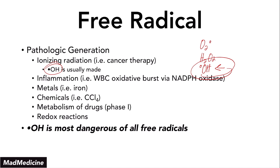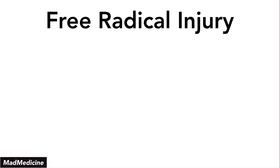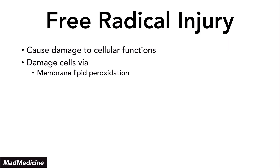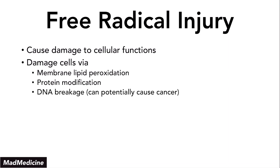When it comes to free radicals, the actual free radical is going to damage cellular function itself. It damages cells by actually peroxidation of the lipid membrane, and it can also affect protein modification as well as DNA breakage. This is how free radicals can lead to cancer, and this is one of the reasons why we stress antioxidants.